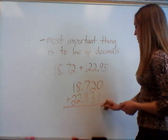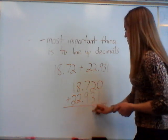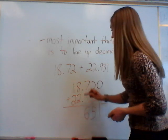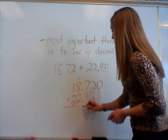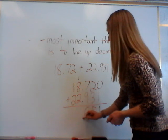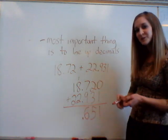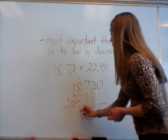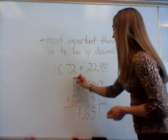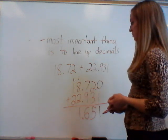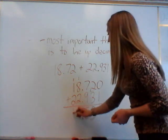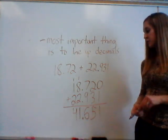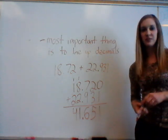Starting from the right: 0 plus 1 is 1; 2 plus 3 is 5; 7 plus 9 is 16, so I put the 6 and carry the 1. I should also make sure I put the decimal in at this point so I don't forget it later. Then 1 plus 8 plus 2 is 11, and 1 plus 1 plus 2 is 4. So the answer is 41 and 651 thousandths.